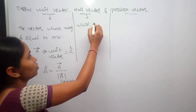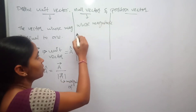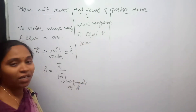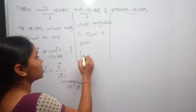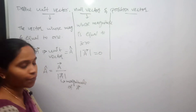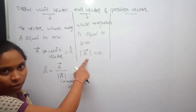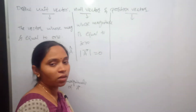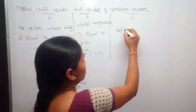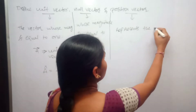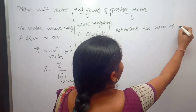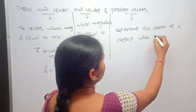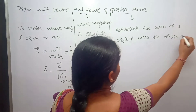Coming to the null vector: the vector whose magnitude is equal to 0. The magnitude of the null vector will be equal to 0, and is given by mod A-bar equals 0. The modulus represents the magnitude of a vector, and it will be equal to 0 for a null vector.